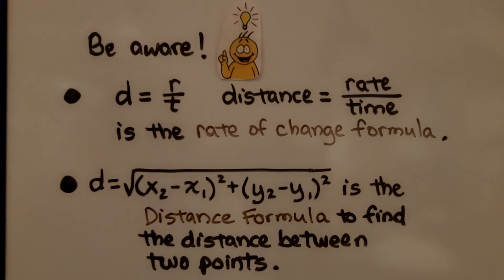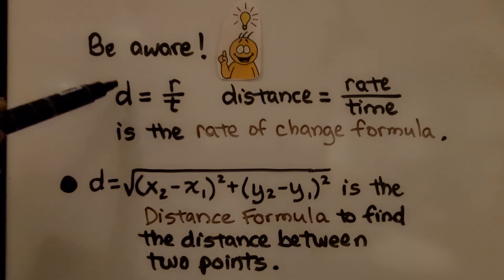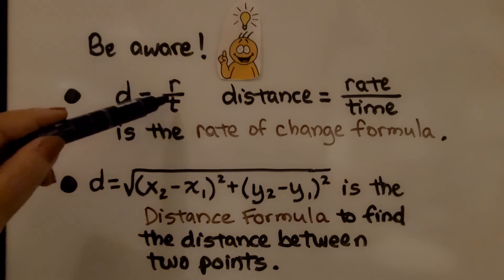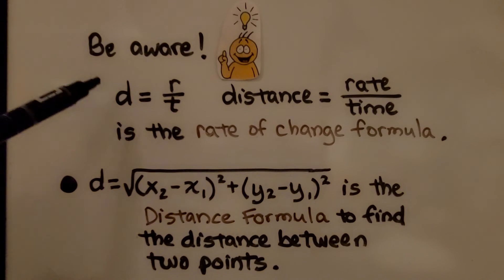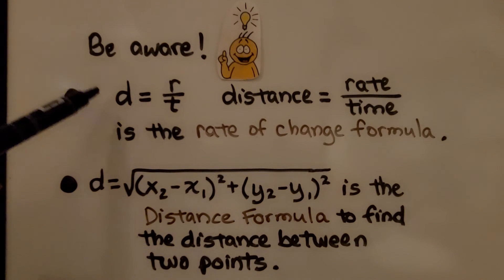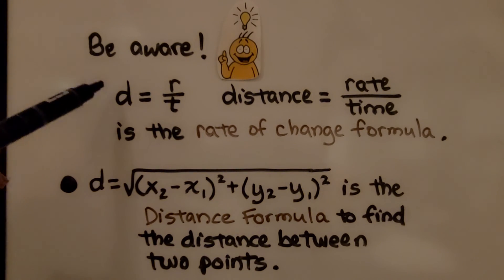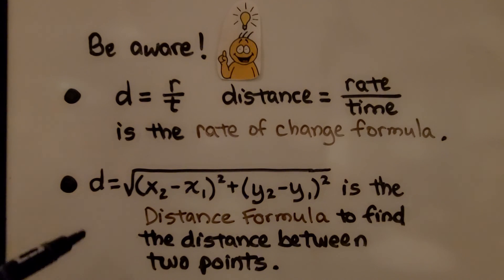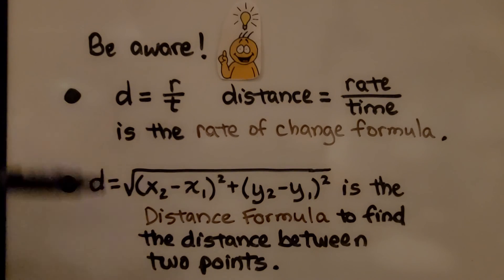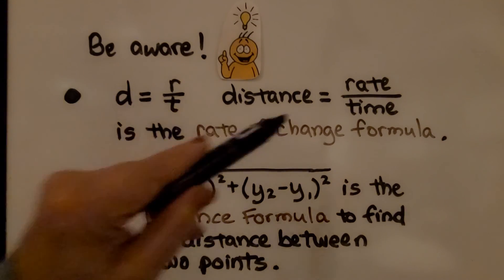As you go through your years in math, you're going to see the formula distance equals rate times time. That's called the rate of change formula. Some people mistakenly call it the distance formula because it has a D for distance — but that is not the distance formula. The distance formula is the one used to find the distance between two points in a coordinate plane. Be very careful not to confuse them. The rate of change formula helps you find the rate of change over time.